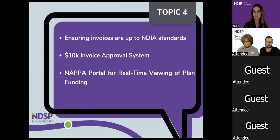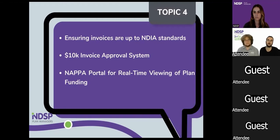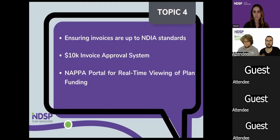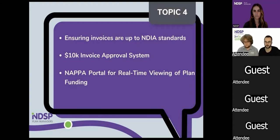We also have our NAPA portal, available for participants and authorised nominees alike. It provides real-time viewing of all plan managed funding — not agency or self-managed funding, purely what we manage as the plan manager. It's a live view of a participant's spending, laid out by budget showing how much they had initially, what's remaining, and how much has been spent. It has same-day updates on invoices — so if you're processing an invoice this morning, it would be showing up on a participant's NAPA by this afternoon.